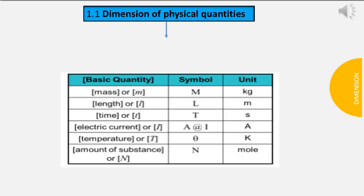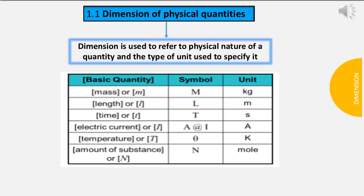Dimension of physical quantities. Dimension is used to refer to physical nature of a quantity and the type of unit used to specify it.